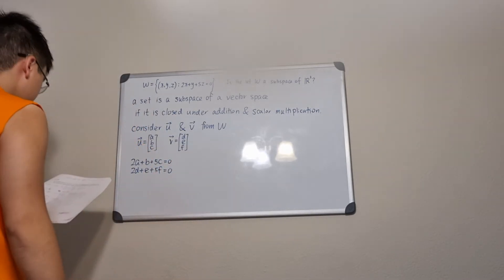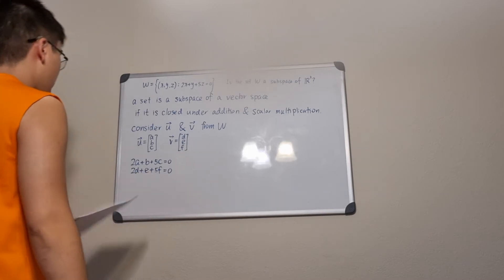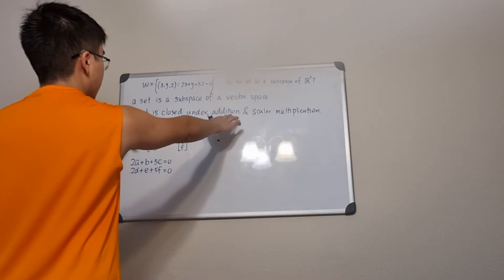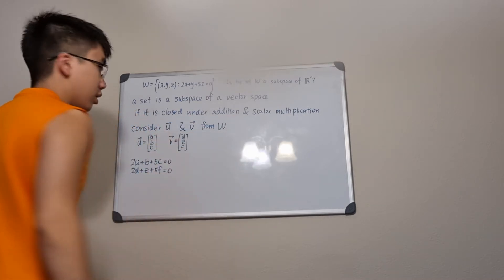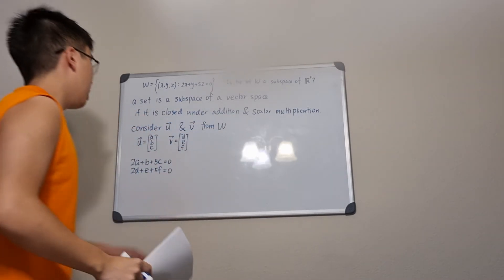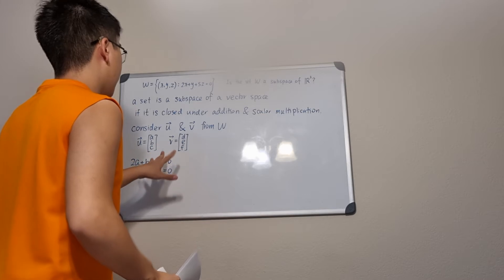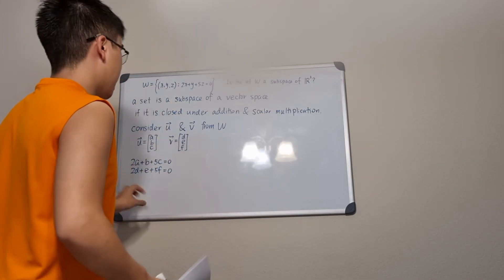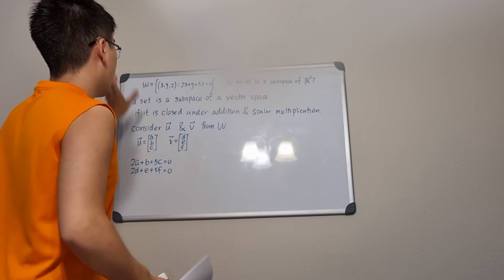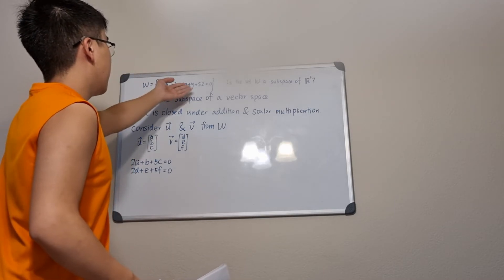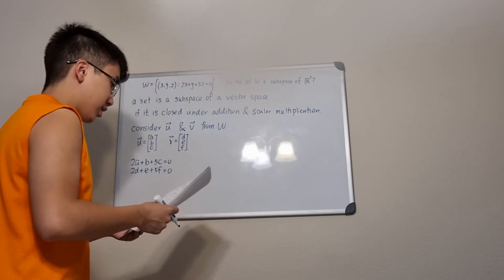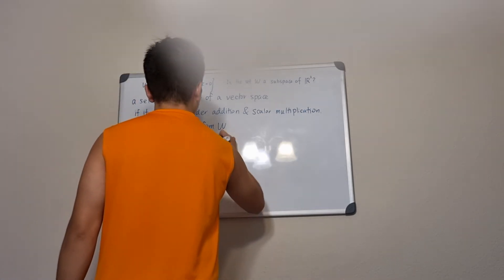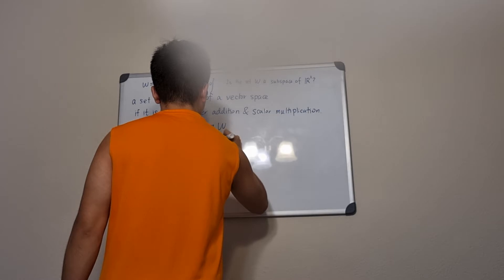Since we got these two vectors from the set, the entries must satisfy the equation. So that means 2a + b + 5c = 0 and 2d + e + 5f = 0 as well. Now we need to check if the set is closed under addition, meaning after we add the vectors, the result is still in the set and satisfies the equation.